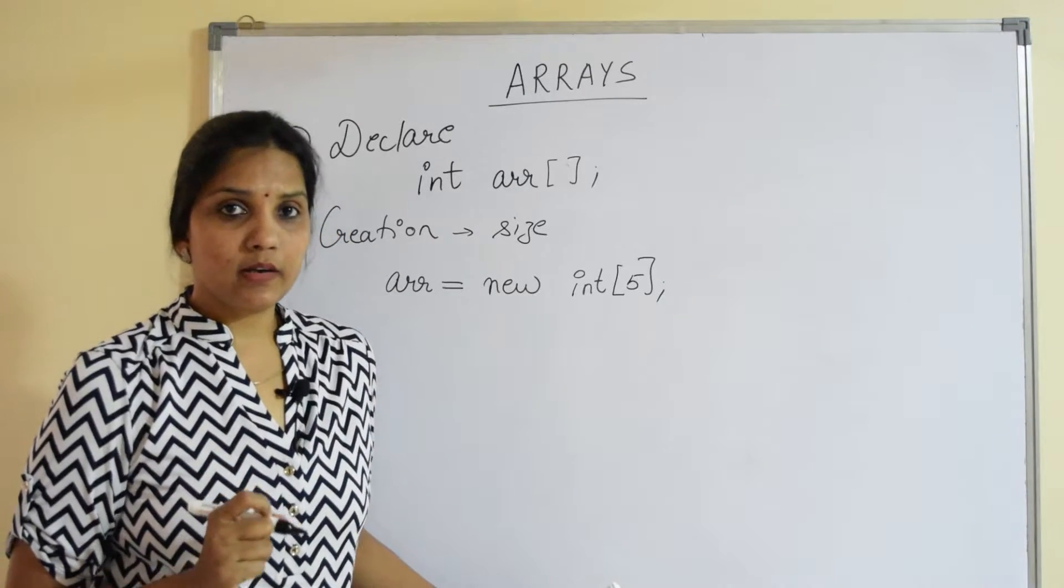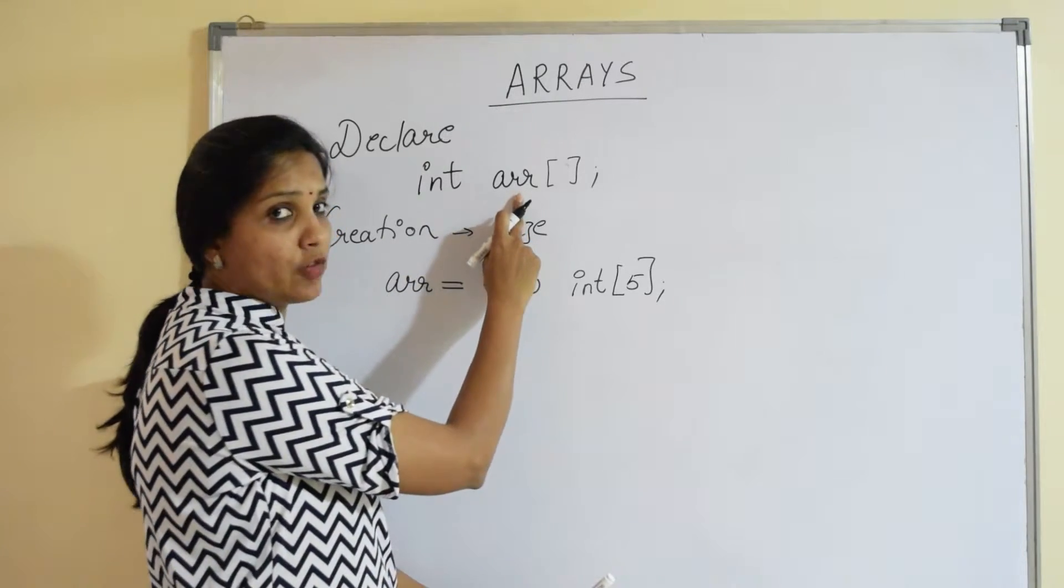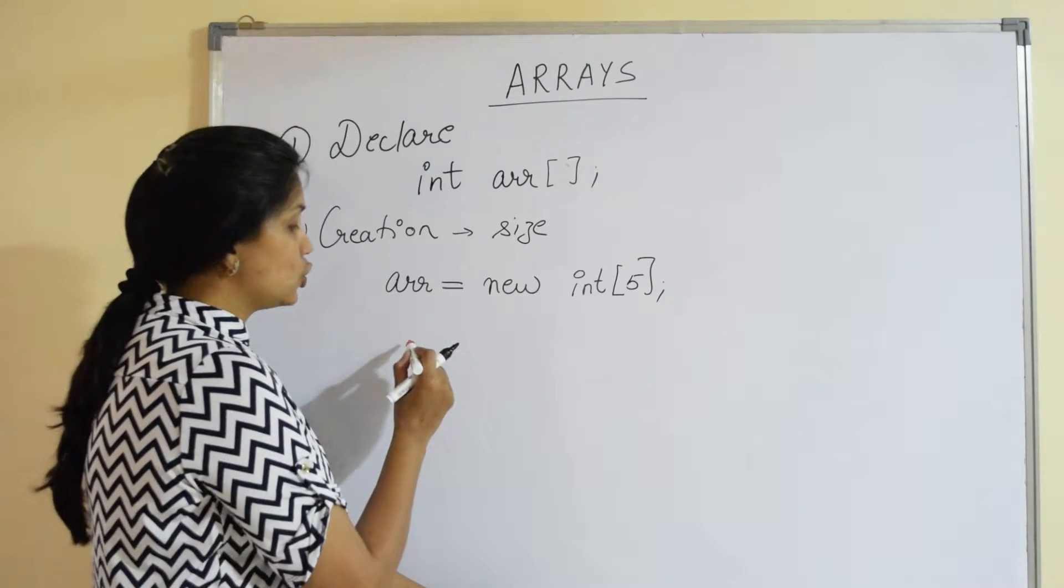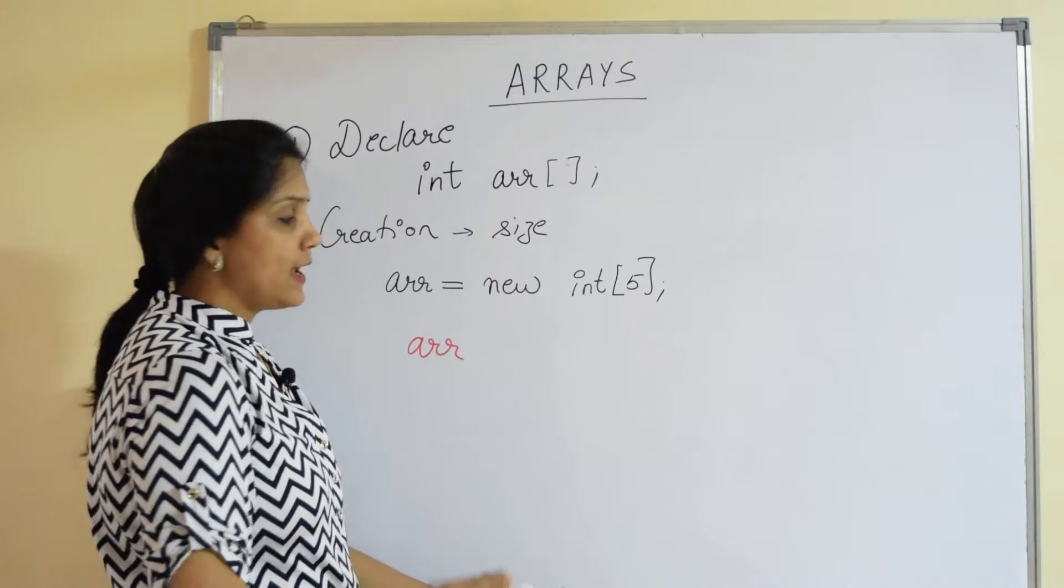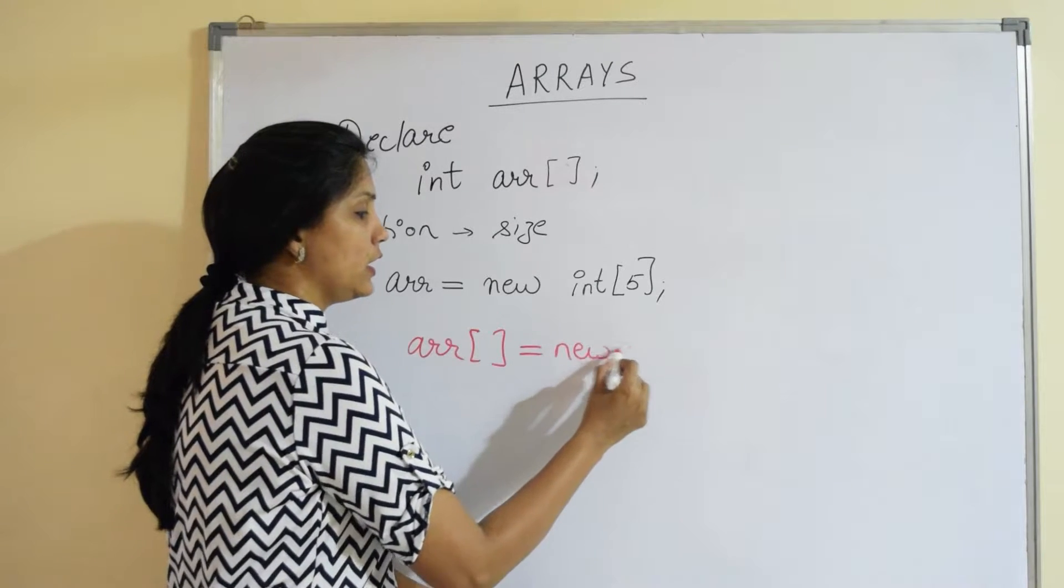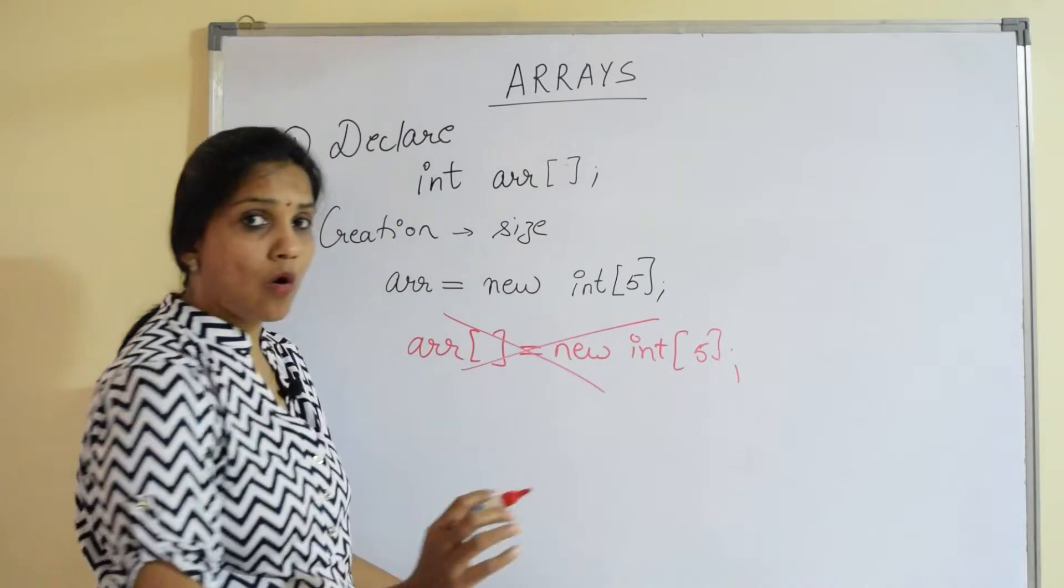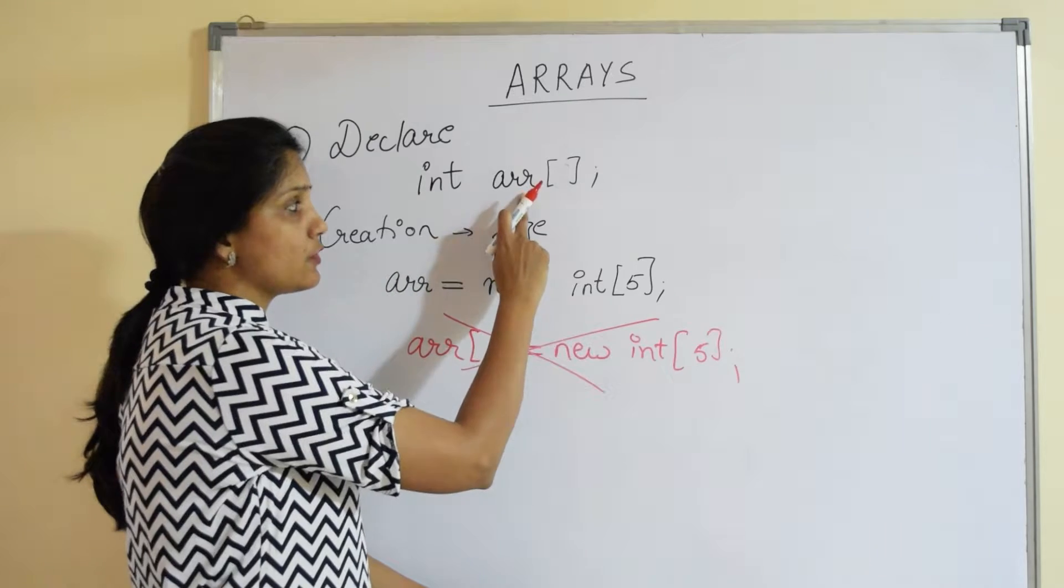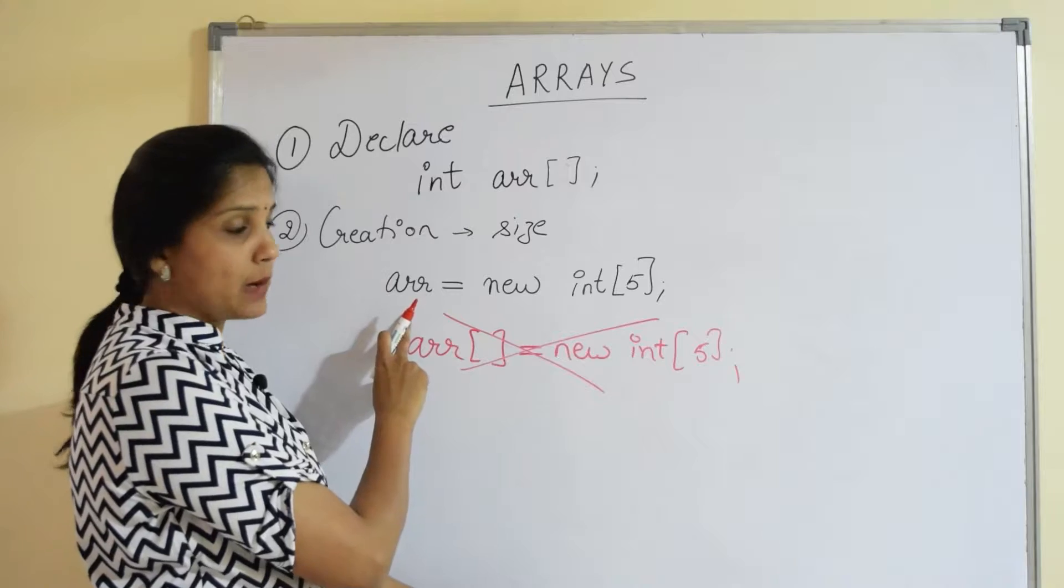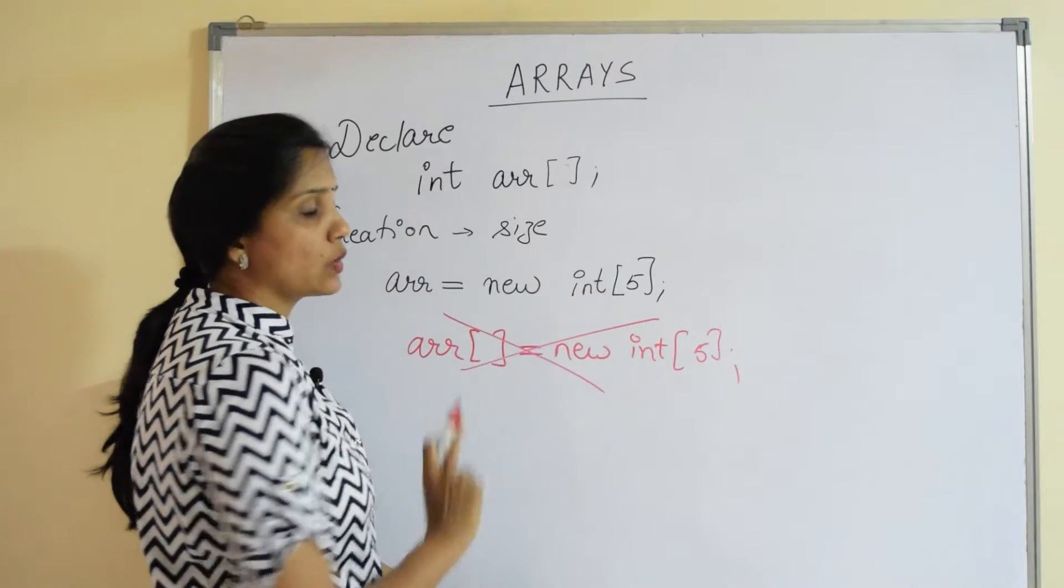One more very important thing to remember at the time of creation is we've already declared the array. So when you write this syntax of creation, you don't write this. So I will not say arr square bracket equals new int and the size. This is wrong. We have already declared this variable as a type of array. At the time of creation, I just use the variable name without the square brackets equal to and I allocate the memory.